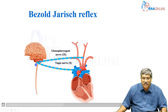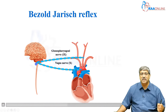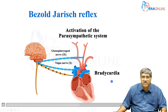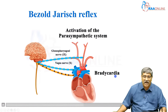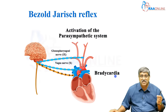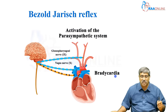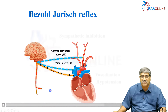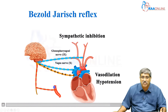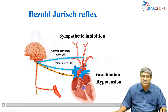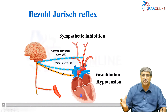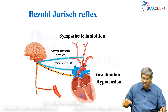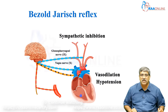From the medulla, there is parasympathetic activation, which leads to bradycardia — that is the first component of the Bezold-Jarisch reflex. While one might think it is a protective reflex, what happens next is sympathetic inhibition, which leads to vasodilation as well as decreased contractility, resulting in hypotension. So there is a triad of hypotension, bradycardia, and vasodilation — that is the Bezold-Jarisch reflex.